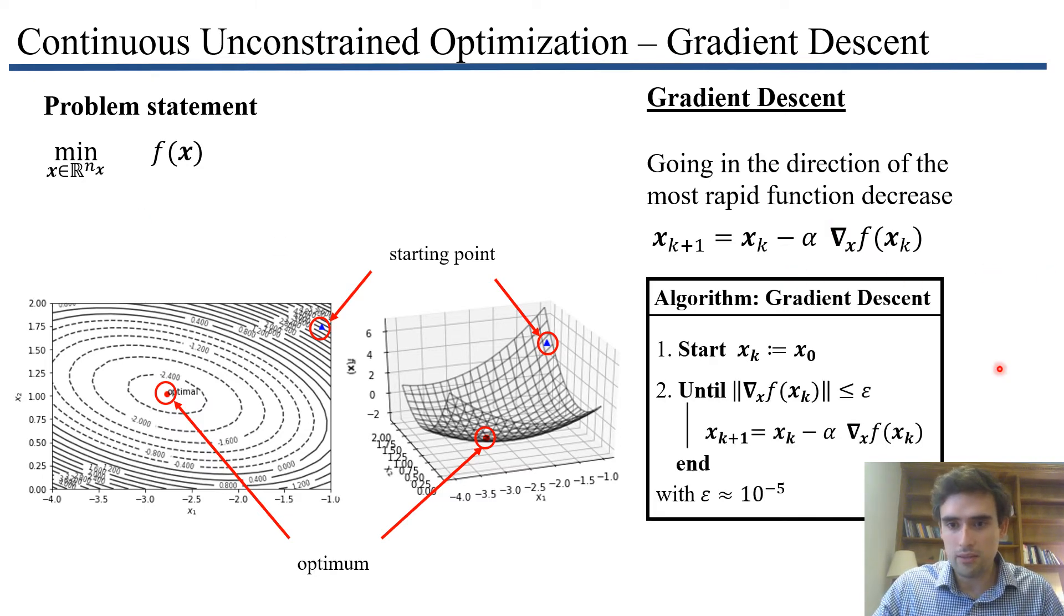The algorithm would be: start at some point x0, then until the norm of your gradient is very small - ε is some tolerance that needs to be close to zero because we're looking for places where gradients are almost zero - we take some predefined step size α, compute the gradient, and take a step in the direction of the negative gradient. We get our new point and iterate until we meet the tolerance.